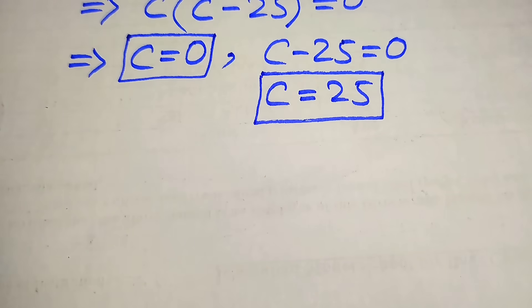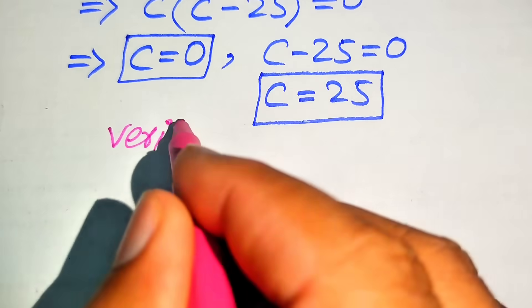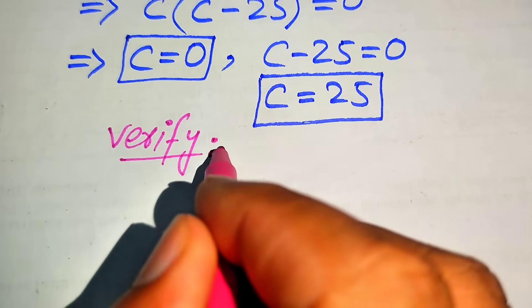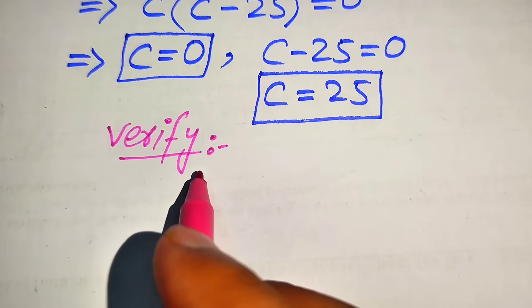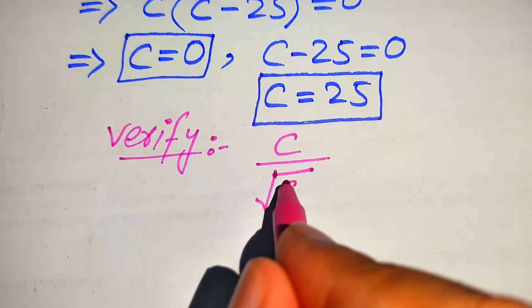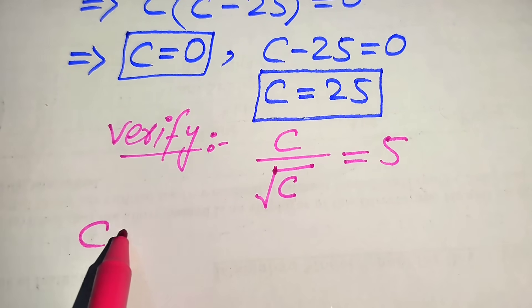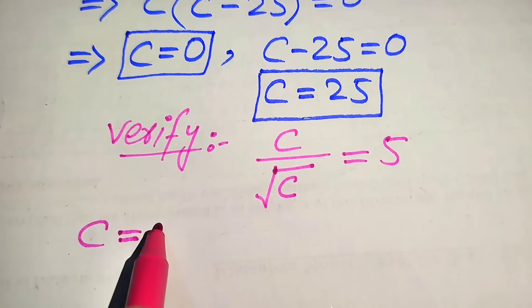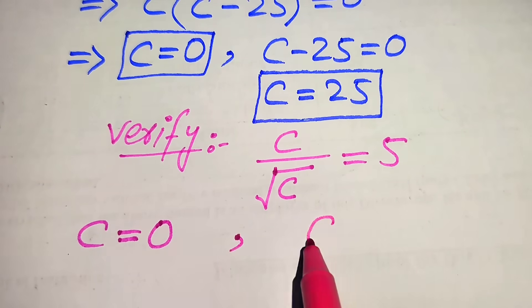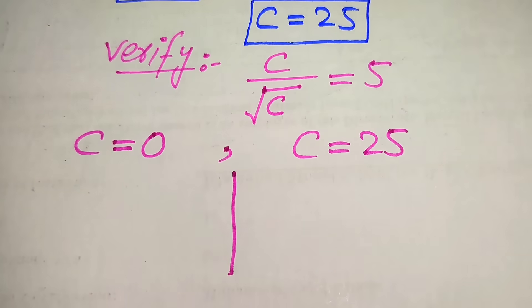Now in the next step we need to verify these two roots and check whether they satisfy our given equation or not. For verification, we copy down the given equation: c divided by square root of c equals 5. On one side we take c equals 0, and on the other side we take c equals 25, and we verify both of these roots.